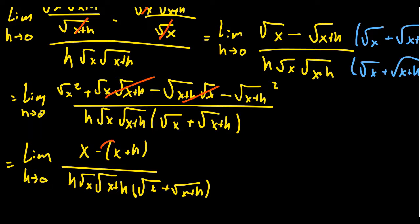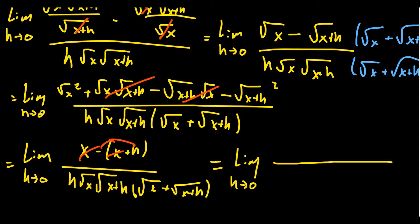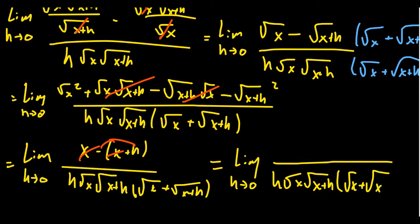The negative sign distributes, and then you have x minus x, so they cancel out. We're now at the limit as h goes to 0 of negative h over h times the square root of x times the square root of x plus h times the square root of x plus the square root of x plus h. Now we have a multiple of h on top and a multiple of h on the bottom, so we can cancel those out.